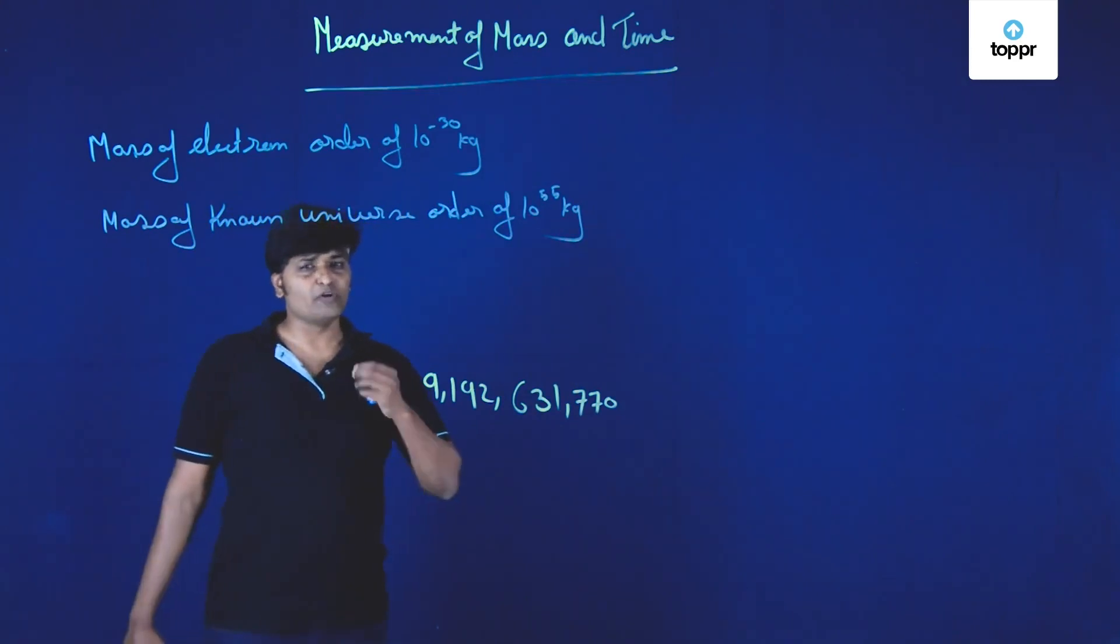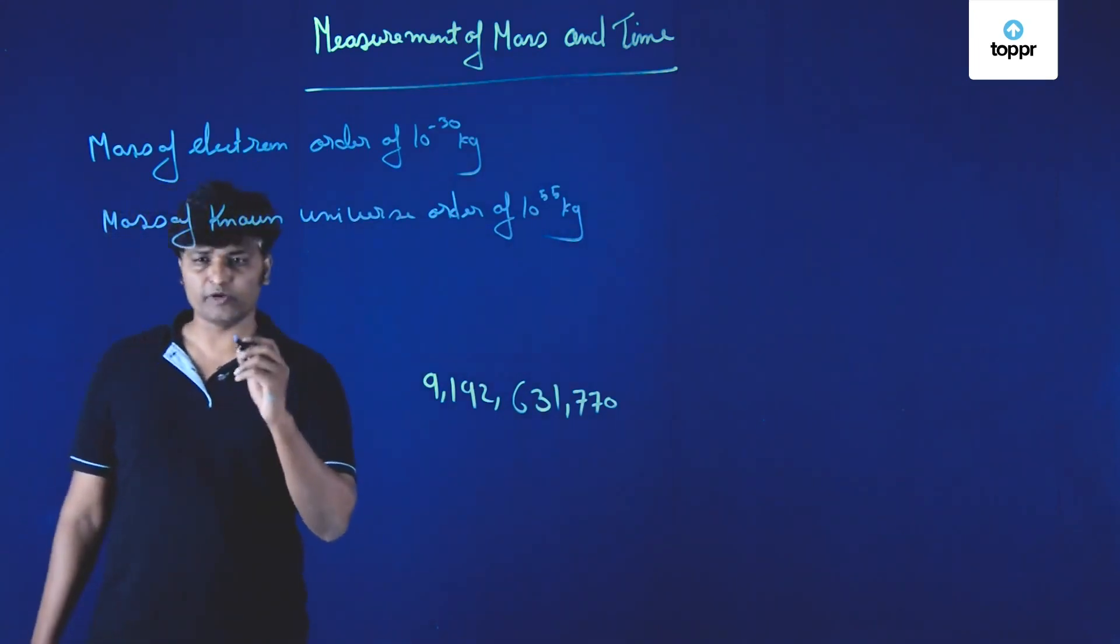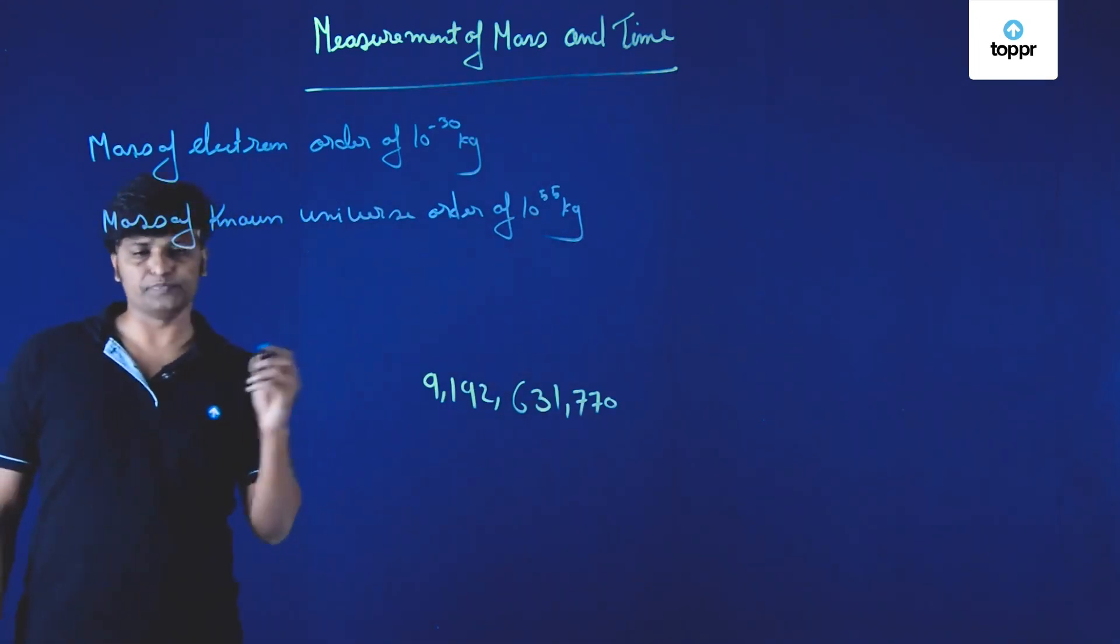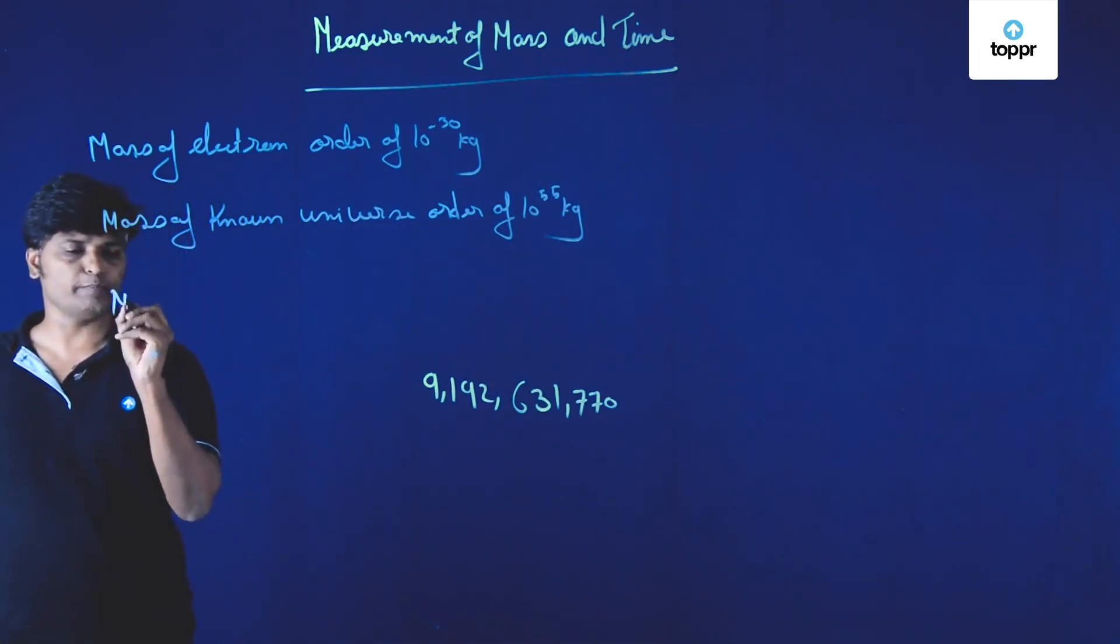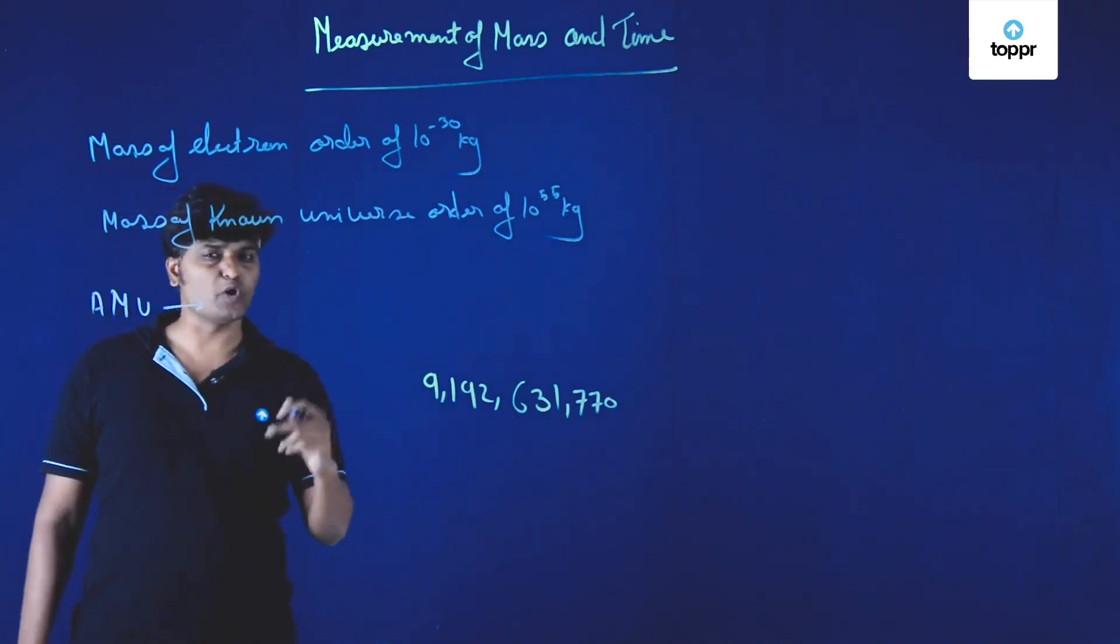Usually very small mass is measured using the unit called AMU. So AMU is used to measure very small mass.